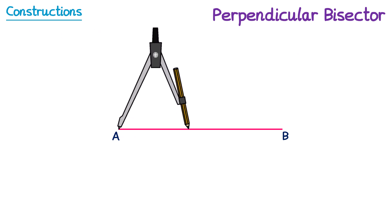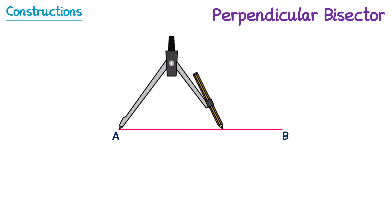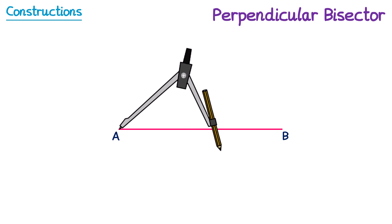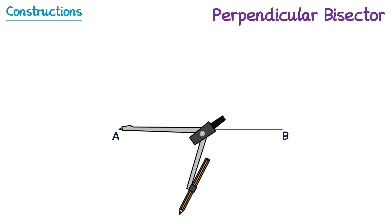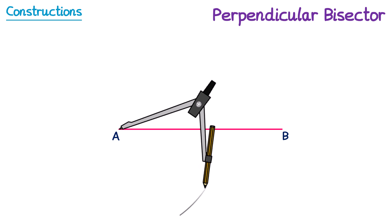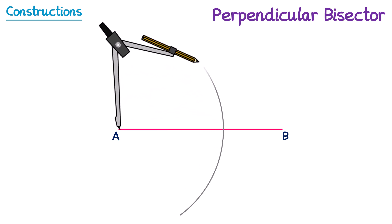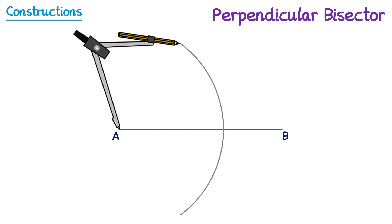Since it's a perpendicular bisector, the line that we use to split them needs to be at a right angle. To do this, we take a pair of compasses and place it at one end of the line, so I'm going to place it at A. You then open the width of the compasses to more than half of the length of the line — and this is important. You then draw yourself an arc that starts at the bottom, goes through the line and ends at the top.